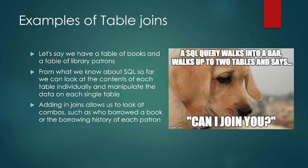Some examples: let's say we have a table of books and a table of library patrons. By using what we know of SQL so far, we can look at the contents of each individually, or manipulate it into a single table if we know how they're related. So we can look at combos — who borrowed this book, or what is the borrowing history of this patron? That will take the patron and the book table and, assuming we have collected this data, we can look at who borrowed a book or what books a person has borrowed.